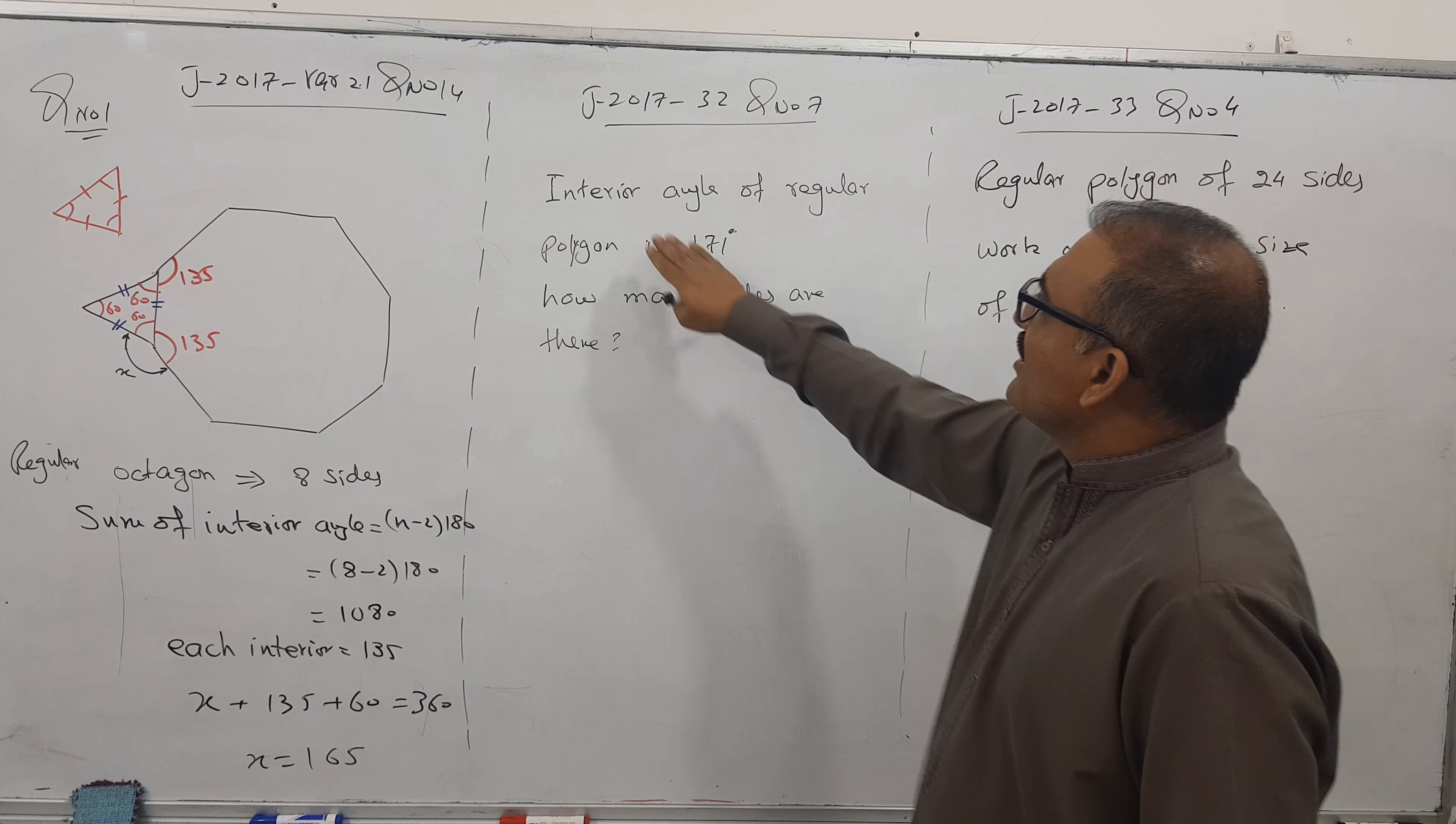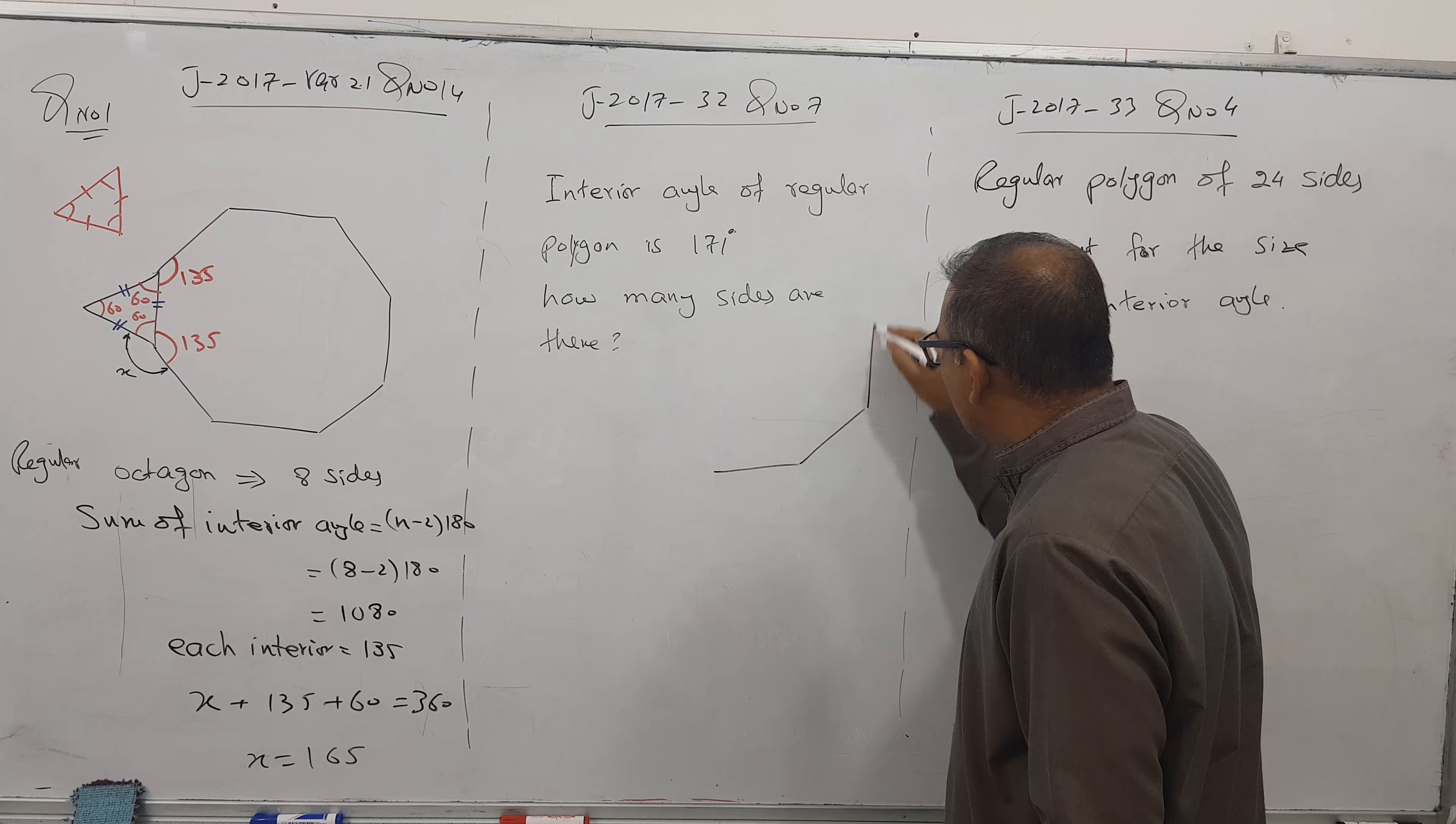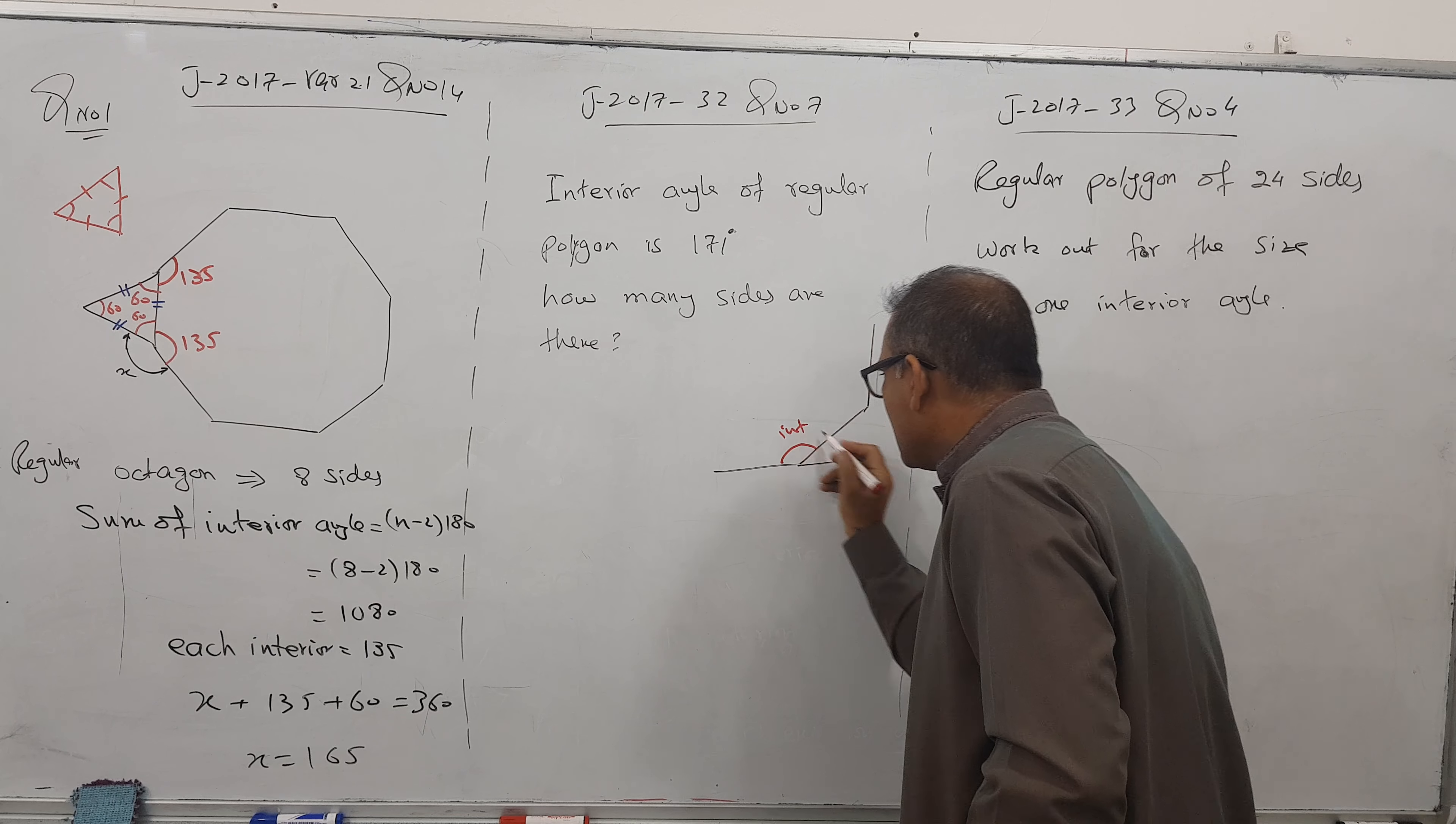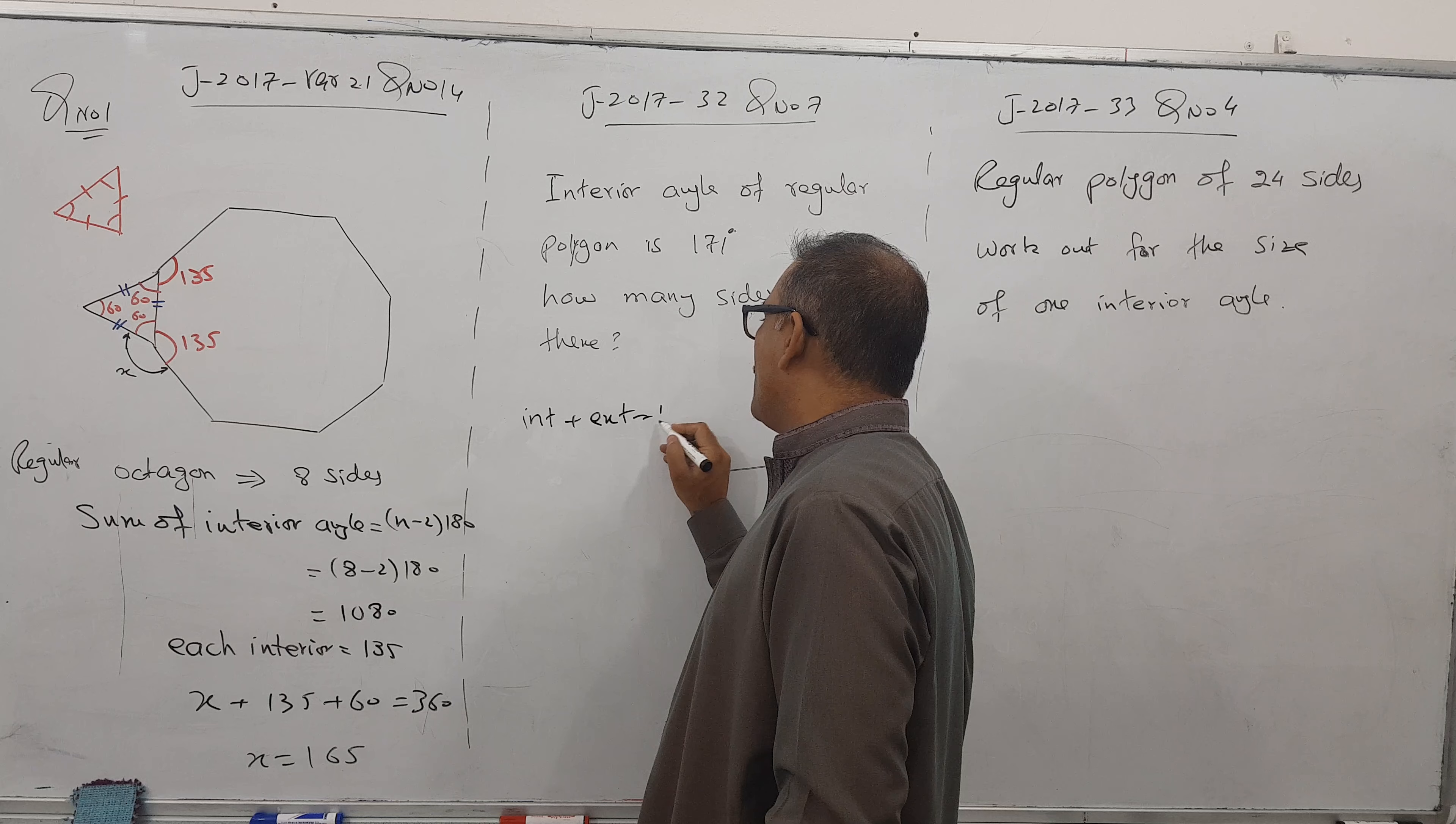Come on to this question. Interior angle of a regular polygon is 171. How many sides are there? Let's say one side, two side, three side - I don't know how many sides. You know that if I extend the line, this is called interior angle, this is called exterior angle. If you want one exterior angle, the formula is: interior plus exterior equals 180.